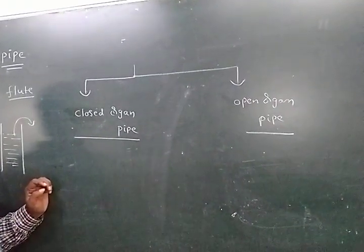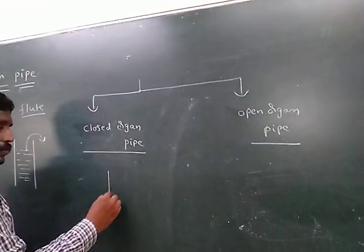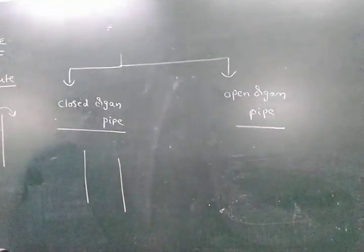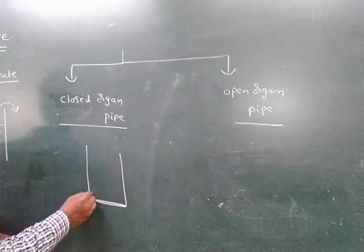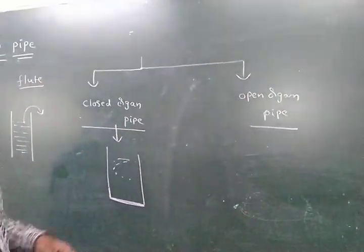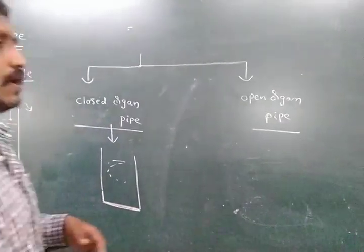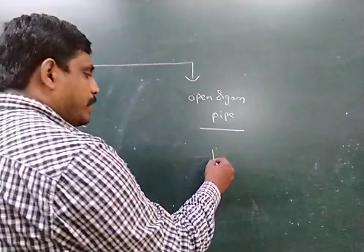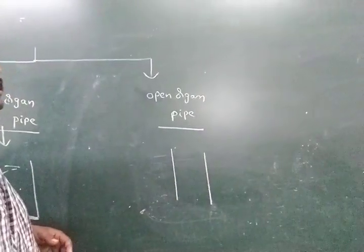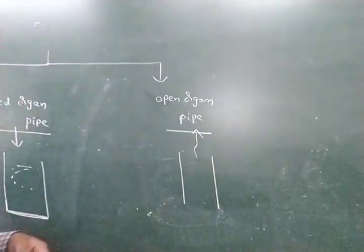The closed organ pipe is very important. The open organ pipe is also important. A closed organ pipe is a cylindrical pipe with an air column where one end is closed and the other end is open. An open organ pipe means both ends are open — it is a cylindrical pipe containing an air column with both ends open.